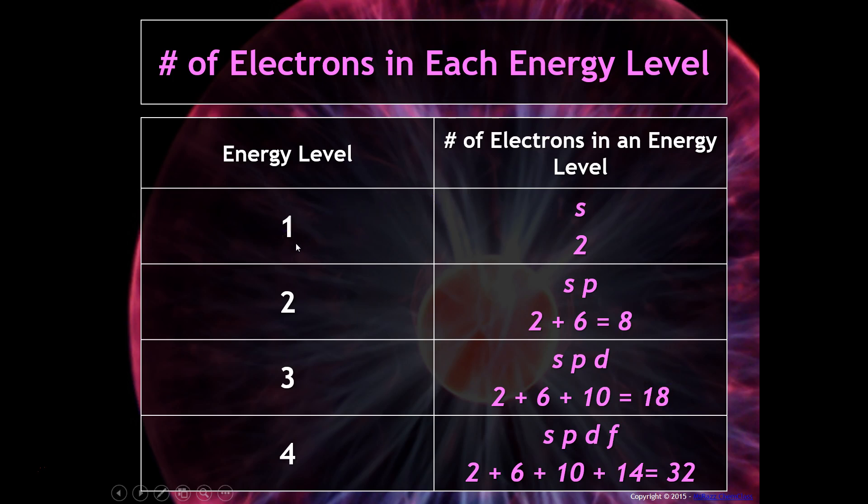In energy level one, there is an s sublevel, and the s can hold two electrons. In energy level two, there is both an s and a p sublevel. Each s can hold two electrons, each p can hold six, for a total of eight. Notice that whether the s is 2s or 1s, s can always hold two electrons no matter what.